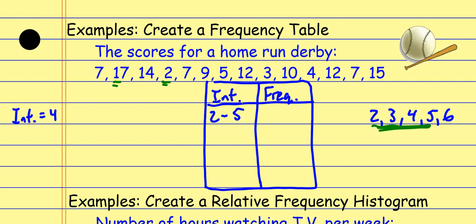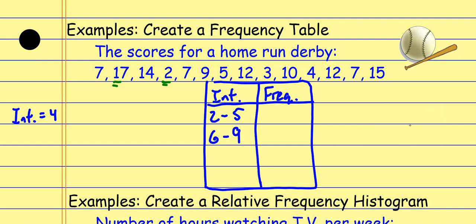So the next interval starts at 6 — no gaps — and goes to 9, giving us 6, 7, 8, 9: four data values. I'd encourage you to count them out on the side or on your fingers. The next interval would be 10 to 13, and the last one would be 14 to 17.